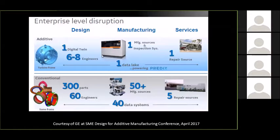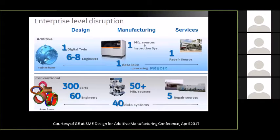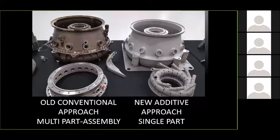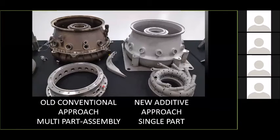Another case in point: a part system that was 300 parts, took 60 engineers and 50 suppliers to produce, is now potentially replaced by one 3D printed version, six to eight engineers, and one manufacturing source. And again: what happened to the 300 contracts? When you look at the part, it's a no-brainer. The one on the left is the old way; the one on the right looks like it belongs on the Nautilus from 20,000 Leagues Under the Sea — this is aerospace. When you show them this kind of money and impact, that's when manufacturers start to pay attention.